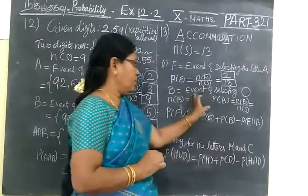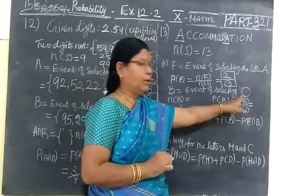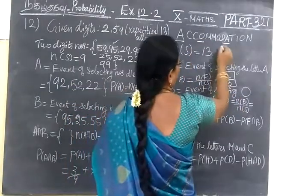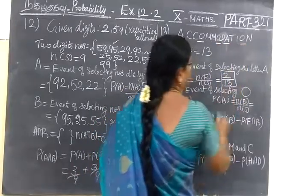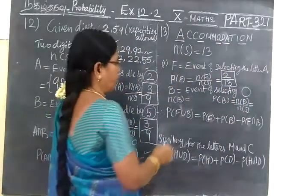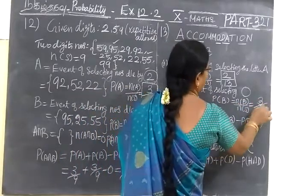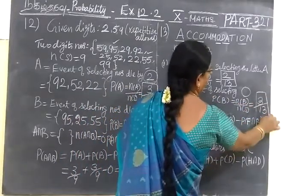Next we are going to select event of selecting the letter O. O how many times comes? 1, 2, 3. So N(O) is coming 3 times. So N(O), 3. P(O), 3 by total number 13.